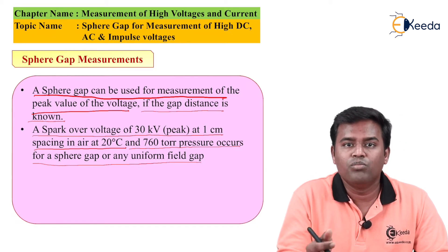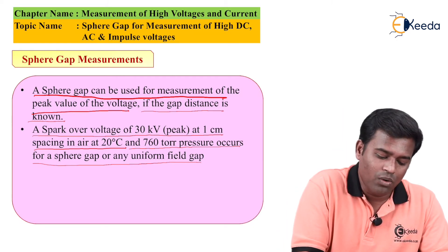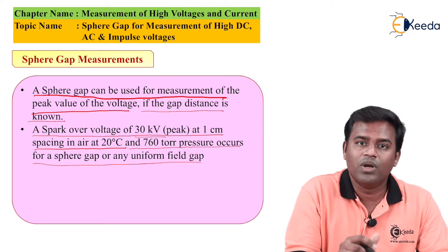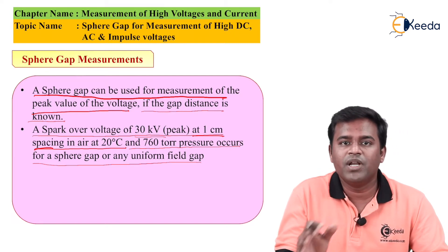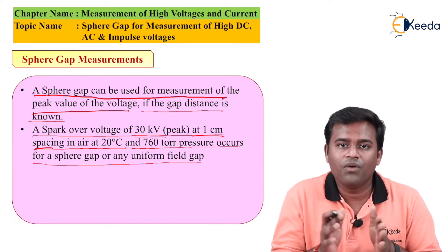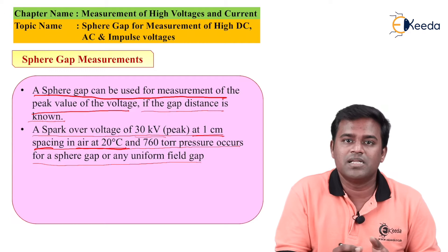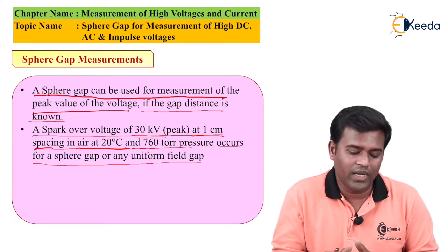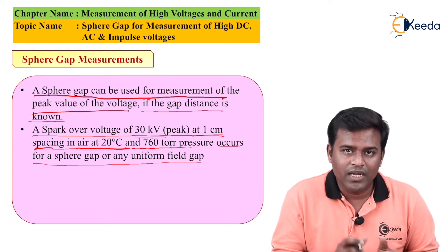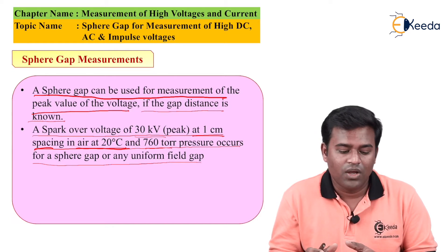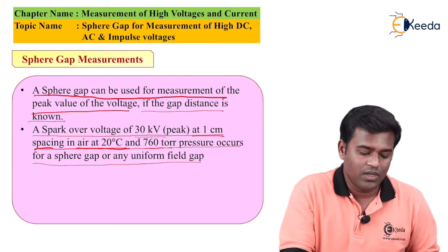The condition to measure the peak value of the voltage is that when the voltage applied is 30 kilo-volt peak at 1 cm spacing between the two spheres, in air at 20 degree Celsius and 760 Torr pressure. So the conditions of temperature, pressure, voltage, and distance have been established. From this we can determine the peak voltage value.